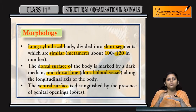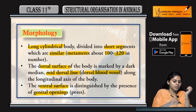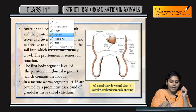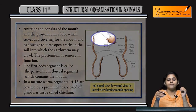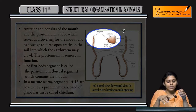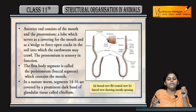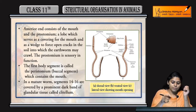Ventral surface ko dorsal surface se distinguish kiya jaata hai kyunki ventral surface mein genital openings ya pores present hote hai. Jo anterior end hota hai earthworm ka, anterior end mein mouth present hota hai. Mouth ko cover karke rakhta hai prostomium, and first jo buccal cavity hoti hai jahan pe mouth present hota hai, usse bolte hai peristomium.